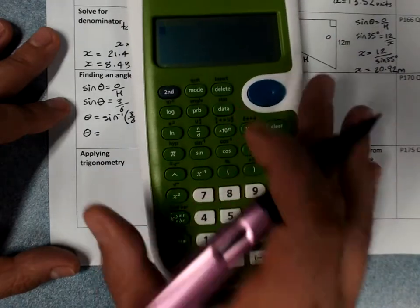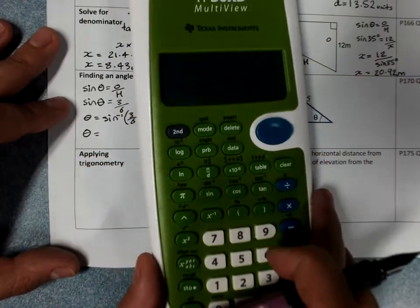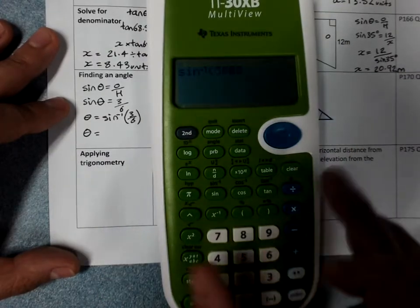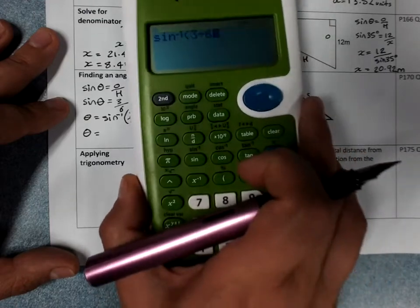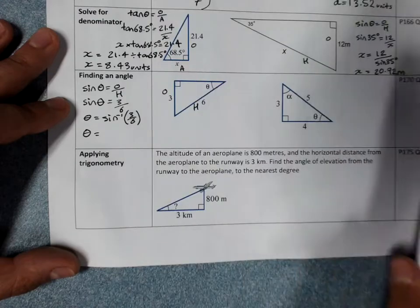We've done our working. That tells me what to put into the calculator. Second function, sine. In brackets there. 3 divided by 6. Or you could use the fraction key for 3 over 6. And it's 30.